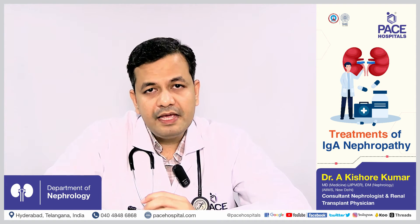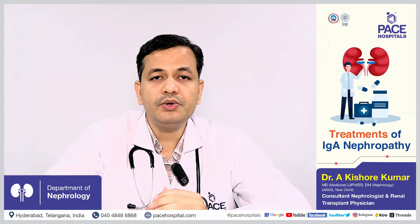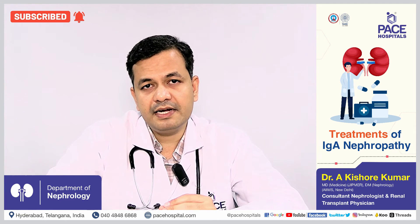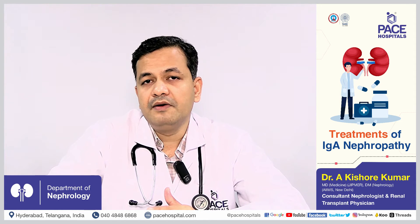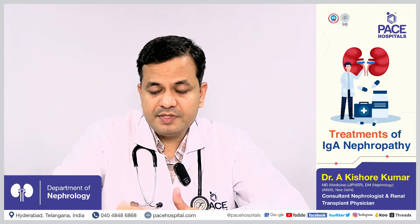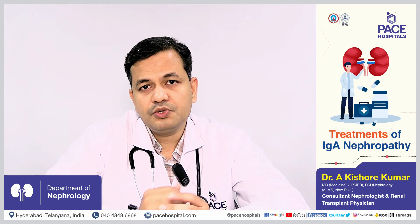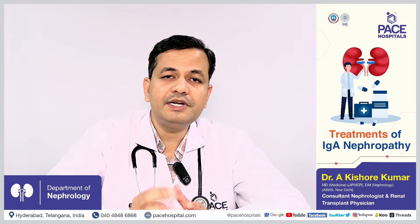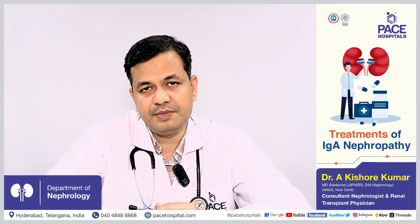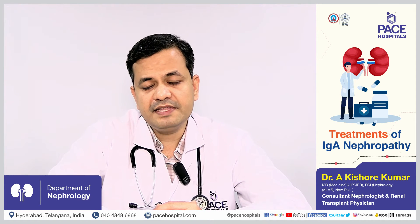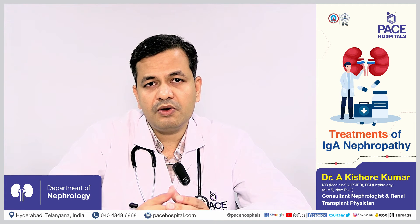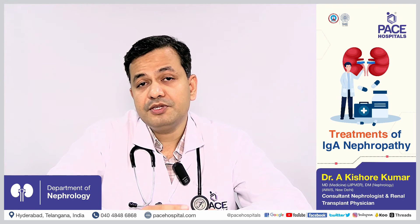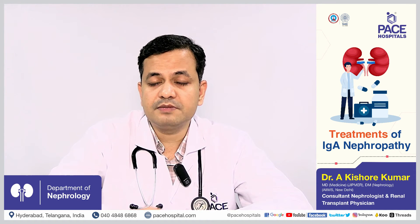The main aim of treatment is not to cure the disease — IgA nephropathy is incurable in the sense that we cannot remove the IgA antibody from the body or remove the deposited antibodies from the kidney tissue. Whatever treatment we give is to control the disease and delay the progression of kidney damage, making the kidneys work for as long as possible.